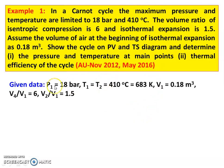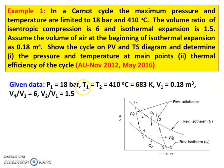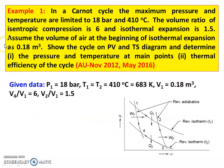Writing down the given data: 1 to 2 is isothermal expansion, 2 to 3 adiabatic expansion, 3 to 4 isothermal compression, and 4 to 1 adiabatic compression. P1 = 18 bar (maximum pressure). Corresponding temperature T1 = T2 = 410 degree Celsius = 683 Kelvin. Volume V1 = 0.18 meter cube. Volume ratio for isentropic compression: V4/V1 = 6. For isothermal expansion: V2/V1 = 1.5.